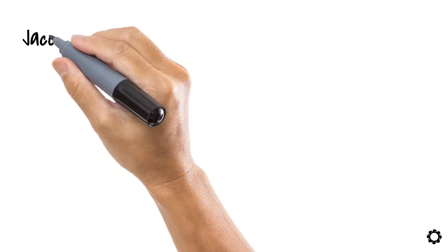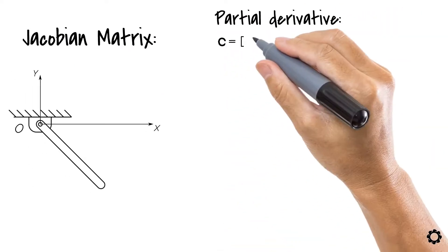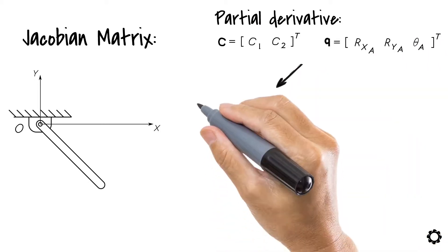Now, the Jacobian matrix of this system is defined as the partial derivative of this vector of constraints with respect to the vector of generalized coordinates. This is written like this.